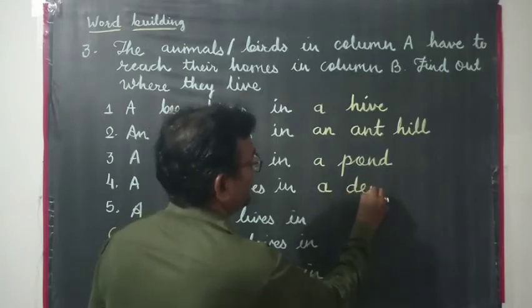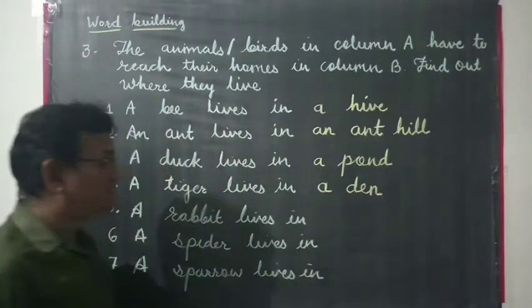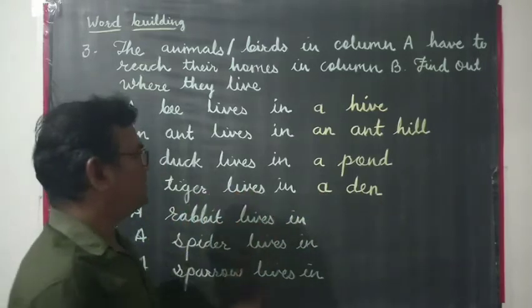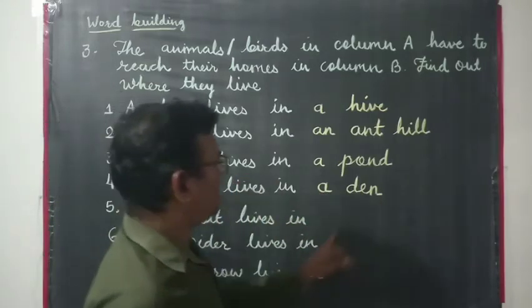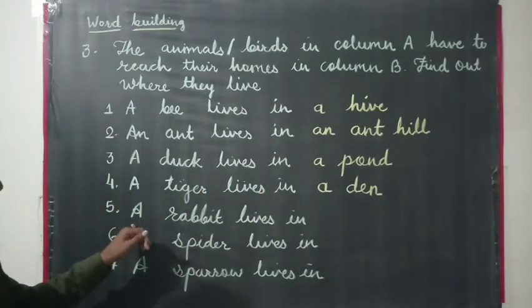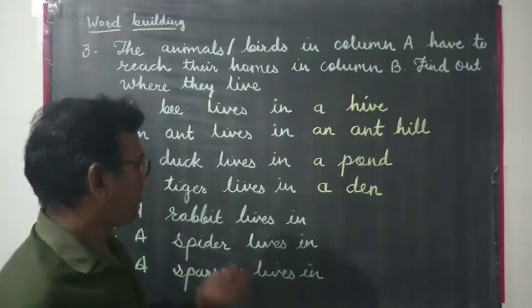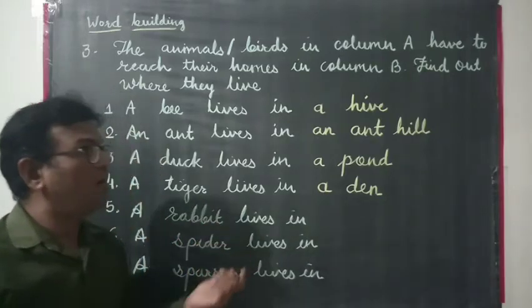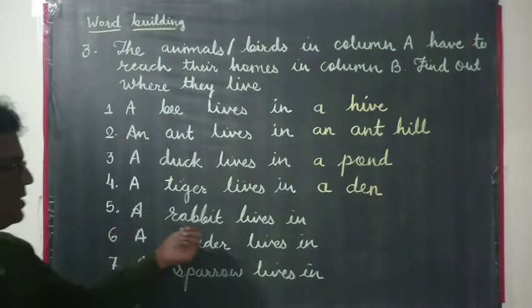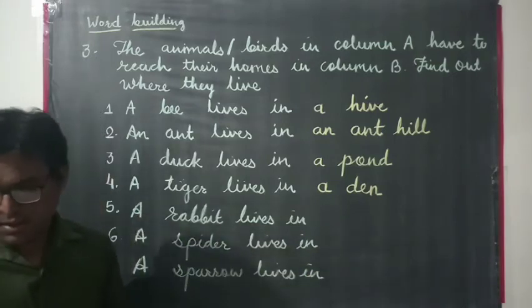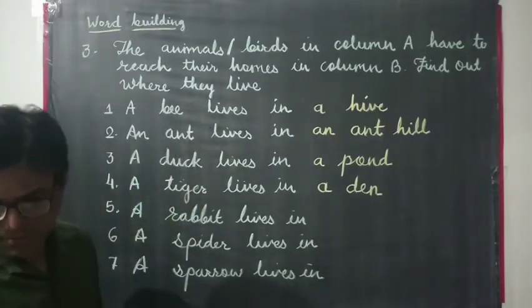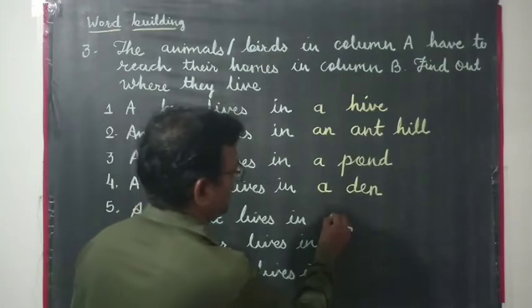This is the home of the tiger, and it is called a den. Tiger lives in a den. Where does a rabbit live? Yes, the home of the rabbit — the rabbit lives in a burrow. In a burrow.